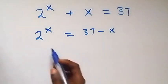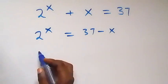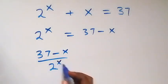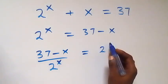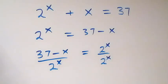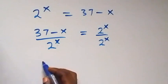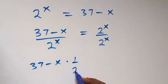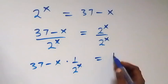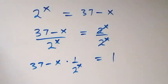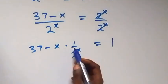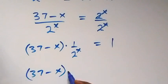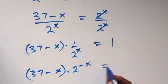From here we divide both sides by 2 raised to power x. We can write this as 37 minus x over 2 raised to power x, then over 2 raised to power x. This becomes 37 minus x multiplied by 1 over 2 raised to power x, equals 1, since the 2^x terms cancel out.